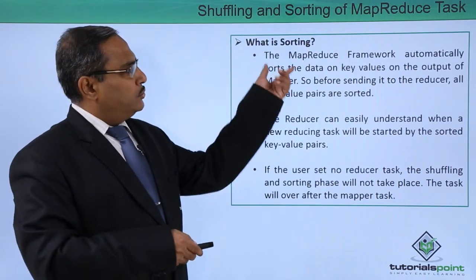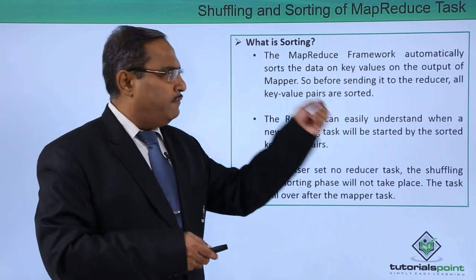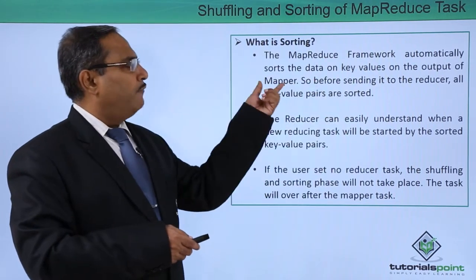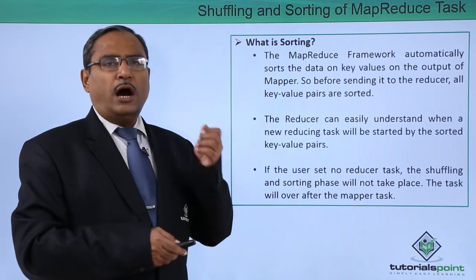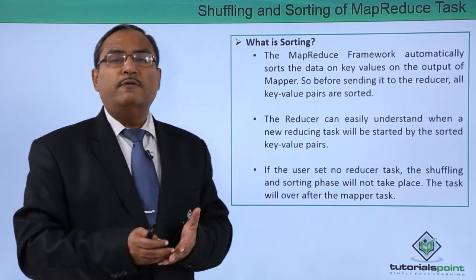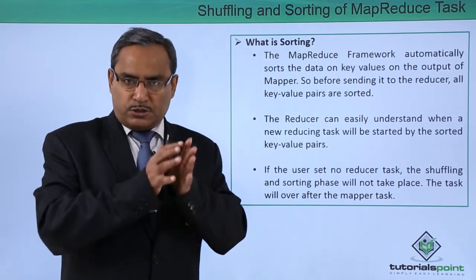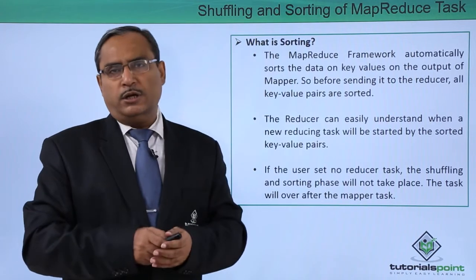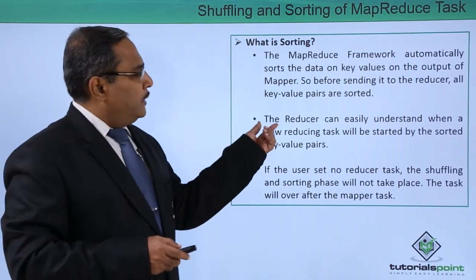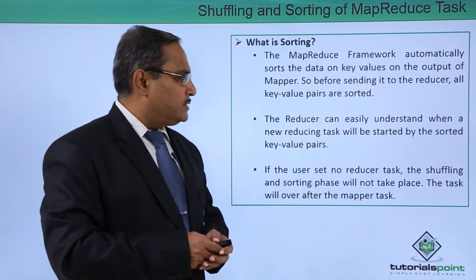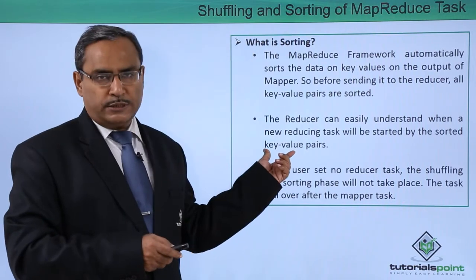Now, what is sorting? The reduce framework automatically sorts the data on the key values from the output of the mapper, and before sending it to the reducer, all the key-value pairs are sorted depending upon the value in the key. This sorted output will be passed as an input to the reducer. The reducer can easily understand when a new reducing task will be started by the sorted key-value pairs.